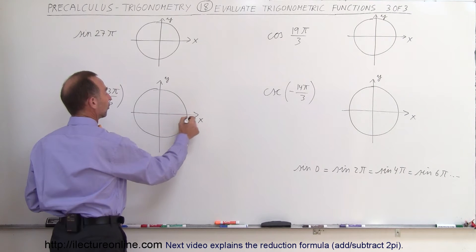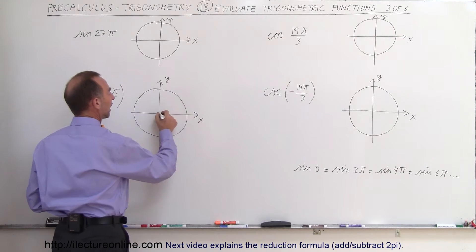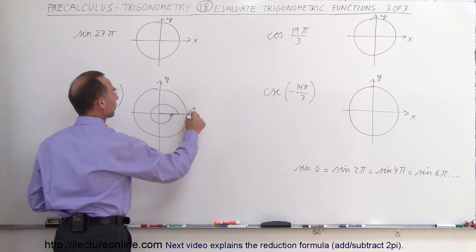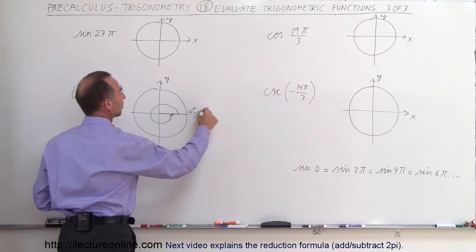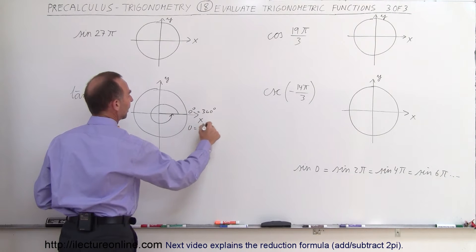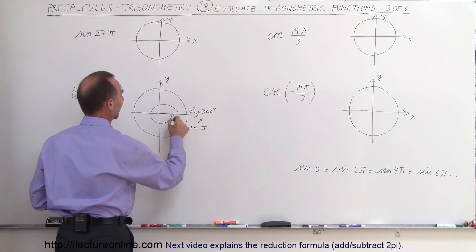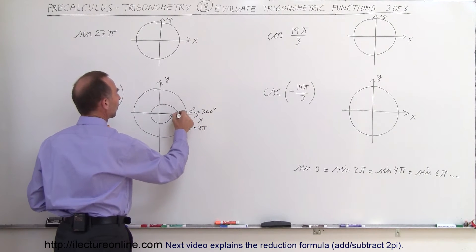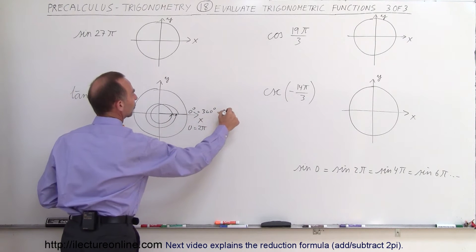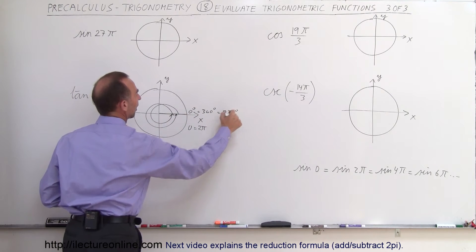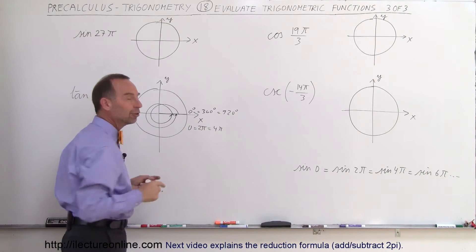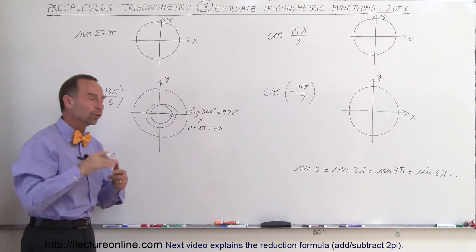That's like going around the unit circle. This would be an angle of 0 degrees, and if you go all the way around, that would be an angle of 360 degrees, which is the same as 2π — so 0 is equal to 2π — and then we go around a second time. So now we have an angle of 720 degrees, and that's an angle of 4π. Every time you go around the circle, every 2π, you start over again.